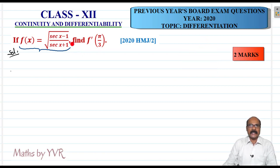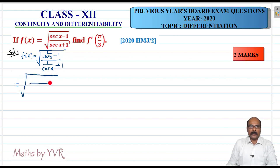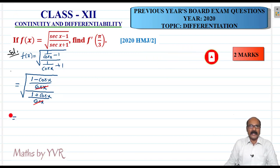From trigonometry, sec θ can be written as 1 by cos θ. So based on this identity, f(x) becomes square root of (1/cos x minus 1) by (1/cos x plus 1). Now take LCM on numerator and denominator. The LCM is cos x, and after cancellation the remaining function is square root of (1 minus cos x) by (1 plus cos x).